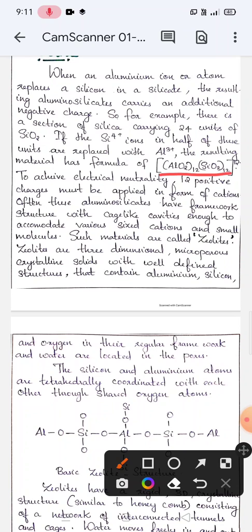Here, the charge is 12- and hence to achieve electrical neutrality, we must apply 12 positive charges in the form of cations. Also, these aluminosilicates have a framework structure with cage-like cavities to accommodate these positive cations and various sized molecules and such materials are called zeolites.